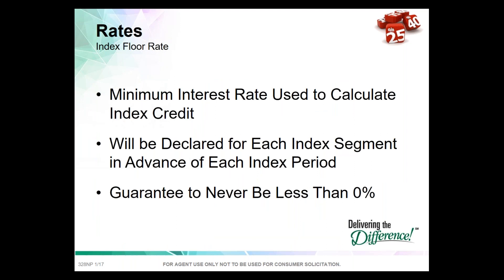The floor rate is what makes index UL so exciting — the idea that we can protect the client from losing money. In a down market, zero is my hero. The floor is guaranteed to never be less than zero percent on North American's products and most products in the industry. If the index goes down, you can't credit a negative return. After the par, spread, and cap rates are applied, the floor rate checks whether the result is at least zero percent; if it's below zero, the credit is changed to zero.